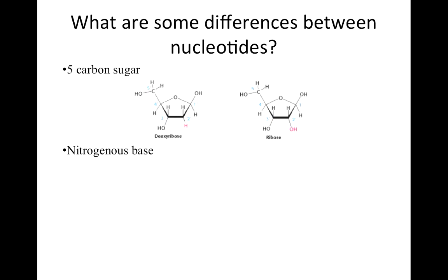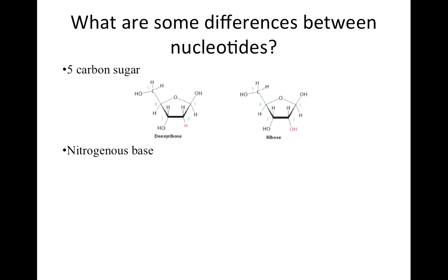The other way in which nucleotides differ has to do with the nitrogenous base that is attached to the five-carbon sugar. Notice that the bases are split into one of two categories, purines and pyrimidines. When complementary bases pair, A with T and G with C, a purine must always pair with a pyrimidine.